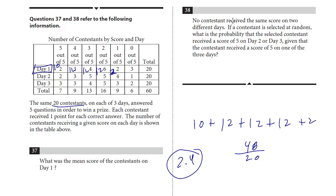All right, last question. No contestant received the same score on two different days. If a contestant is selected at random, what's the probability that a selected contestant received a score of five on day two or three, given that the contestant received a score of five on one of the days? So we're only selecting at random from contestants who scored a five.